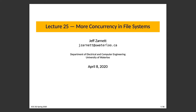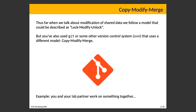Lecture 25: More Concurrency in File Systems. Thus far, when we've talked about modification of shared data, we follow a model you could describe as lock, modify, then unlock. You acquire a lock to restrict access to the resource you want to operate on. While you have that resource locked, you are allowed to make modifications. When you are done, you unlock it, thus allowing another thread to have its turn.